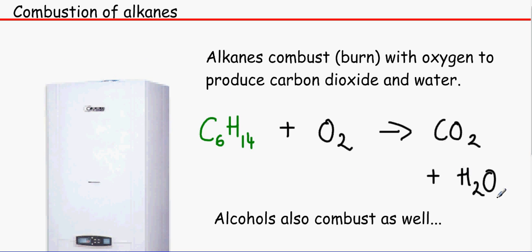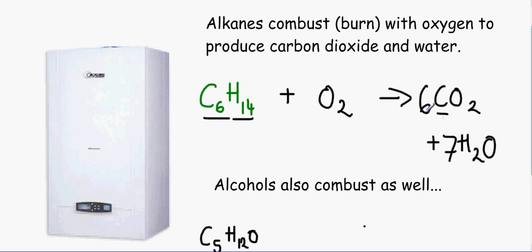As you can see here, this is an incomplete or unbalanced equation. We need to balance it. We've got six carbon atoms here and one there, so we need six. We've got 14 atoms of hydrogen, so we need seven H2O. Now we can look at the oxygen. There are 12 atoms of oxygen here plus seven, which makes 19 in total. We need 19 divided by 2 molecules of O2.